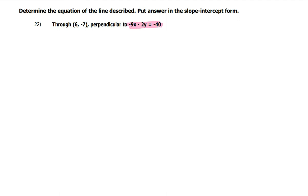Which means the slope that I need is going to be the opposite reciprocal of that line's slope. So I'm going to start by figuring out the slope of the line they gave me. And to do that, I will solve it for y.